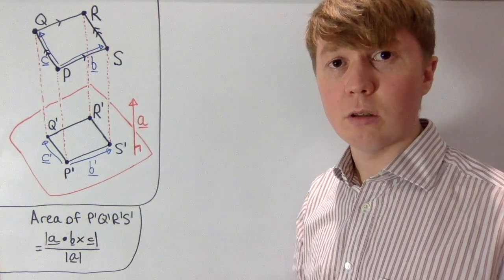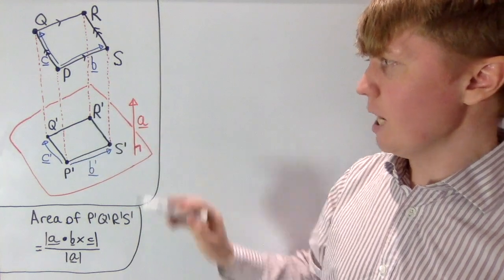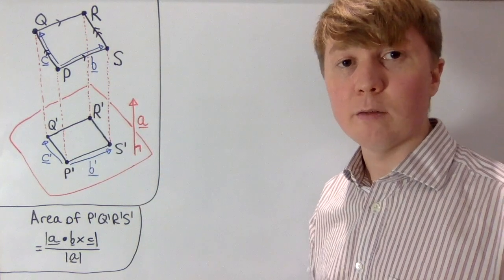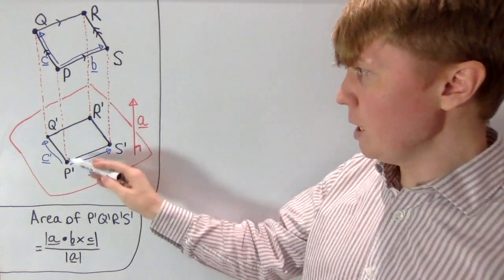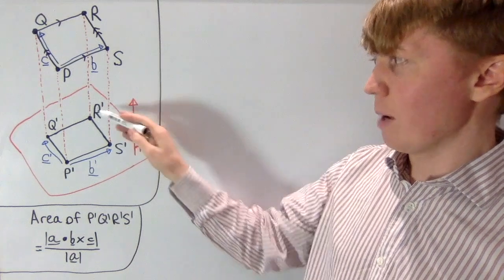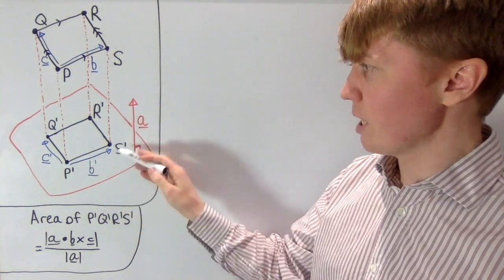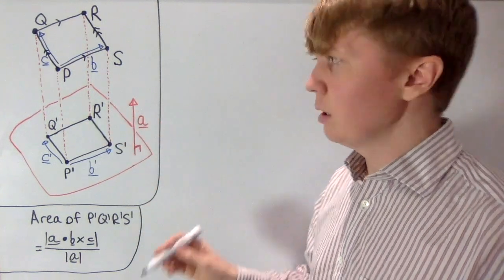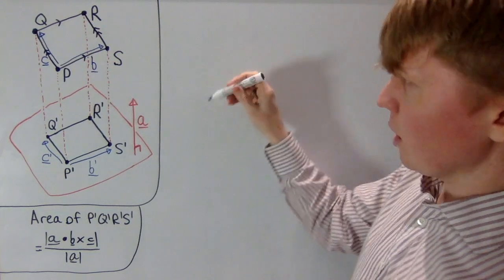The first thing we'll do is show that p prime, q prime, r prime, s prime — the projection of our parallelogram — is itself a parallelogram. We'll show that the vector p prime q prime is parallel to the vector s prime r prime. Then you could use the same argument to show that p prime s prime is parallel to q prime r prime. So we'll focus on just four points at a time.